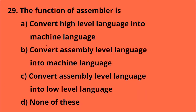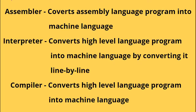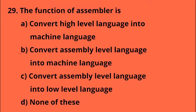The function of an assembler is to convert assembly language into machine language, line by line. A compiler converts high level language programs into machine language. Option B — assembly language.